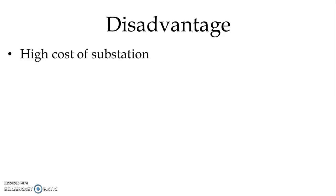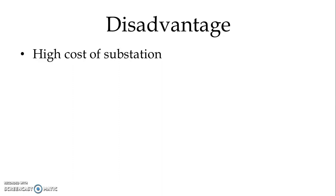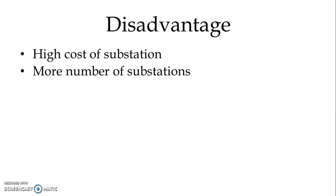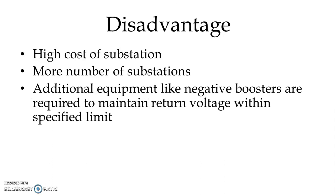Now the disadvantages: the cost of substations is high, and a large number of substations are required. All substations are non-attended type with supervisory control, so the cost of preparing each substation is very high. The spacing between substations depends upon the operative voltage. Additionally, extra equipment such as negative boosters are required to maintain the return voltage within specified limits, which further increases the cost.